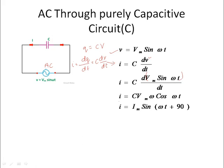Differentiating C into Vm sin omega t gives C times Vm times omega times cos omega t. Since Im equals C times Vm times omega, we can replace the term. Then cos omega t can be written as sin of omega t plus 90 degrees. So the final equations are established.